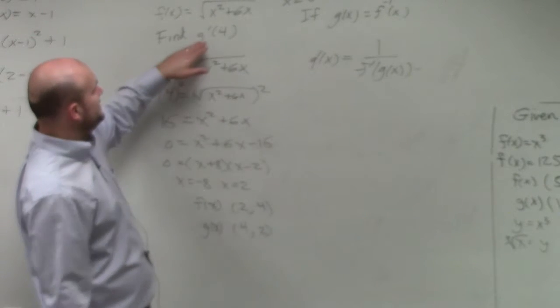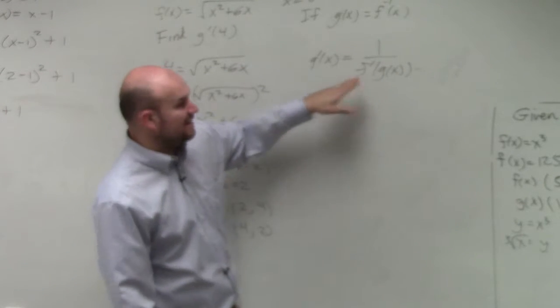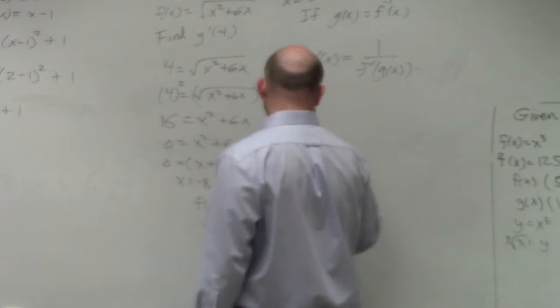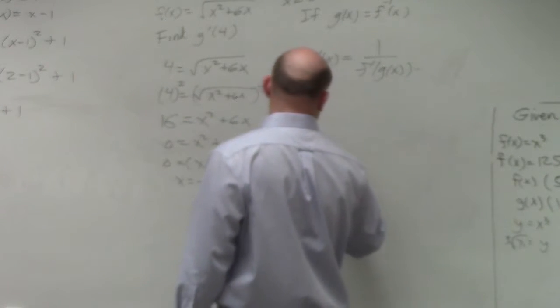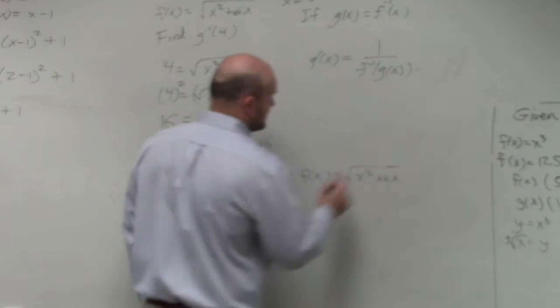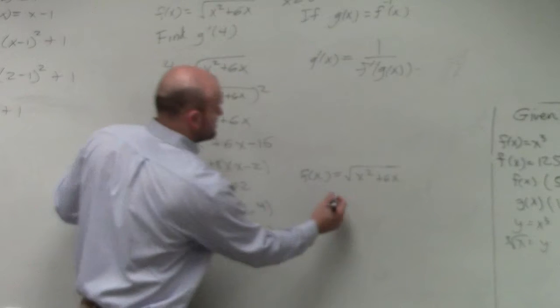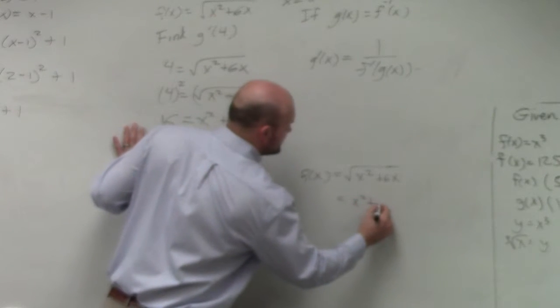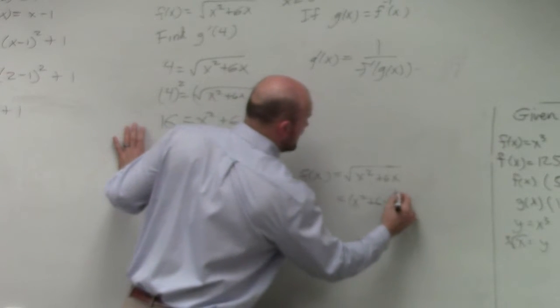Now, the last thing we know is we need to find f inverse. So let's just do f of x equals the square root of x squared plus 6x. Let's rewrite that as x squared plus 6x raised to the 1 half power.